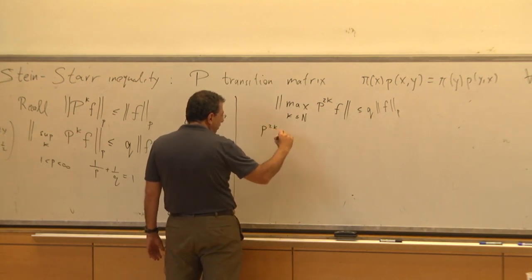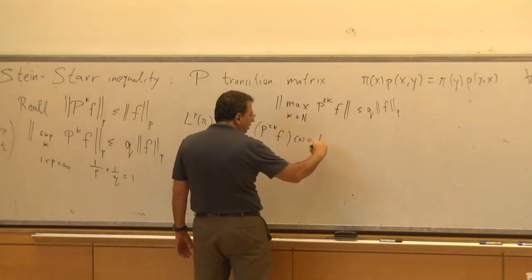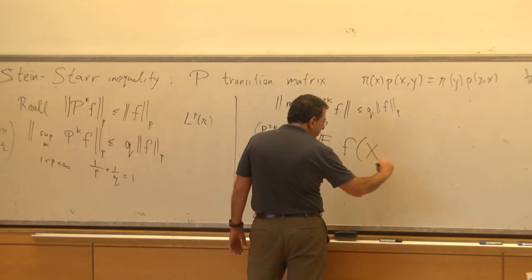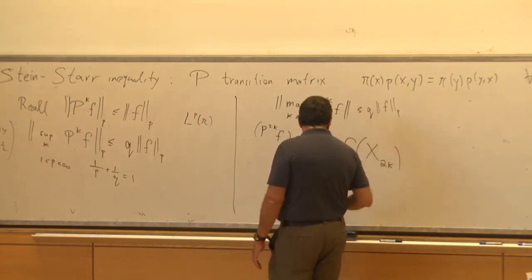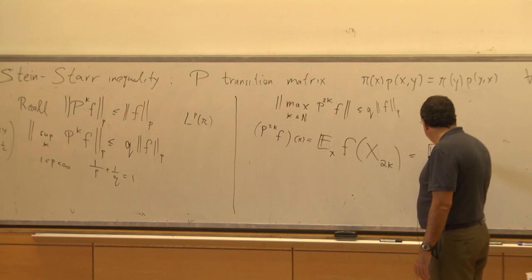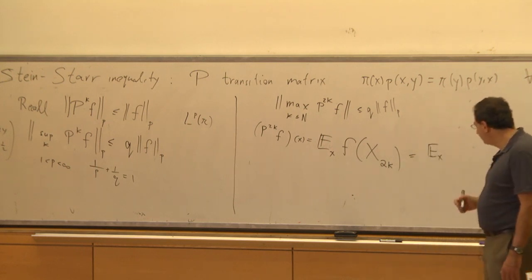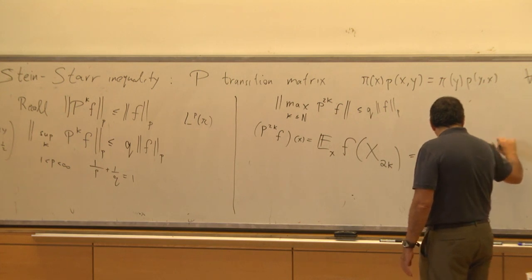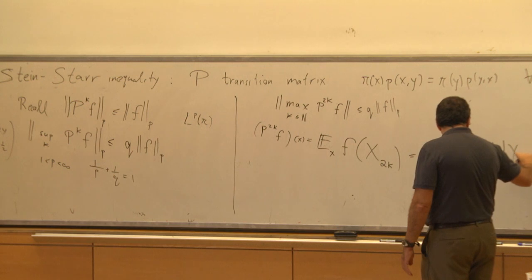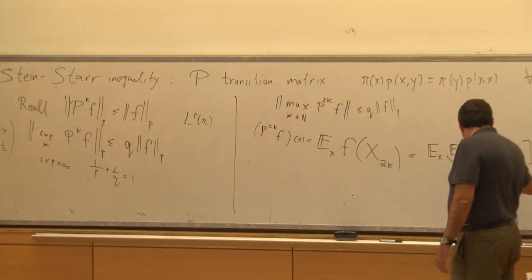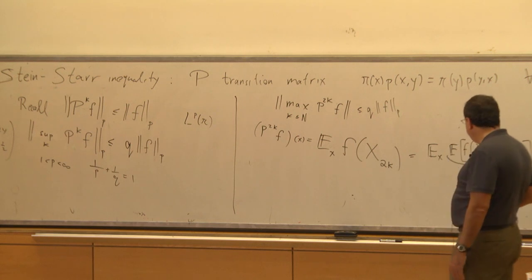P^{2K} F at point x is the expectation, starting from x, of the function F evaluated at the Markov chain X at time 2K. The idea is to write this as the expectation of the expectation of F(X_{2K}) given X_K, using the tower property of conditional expectations. Let's call this expression R_K.